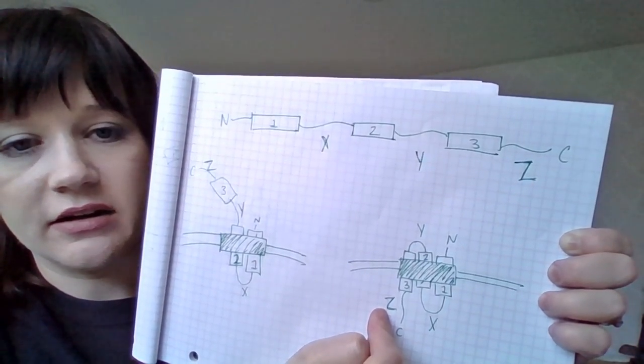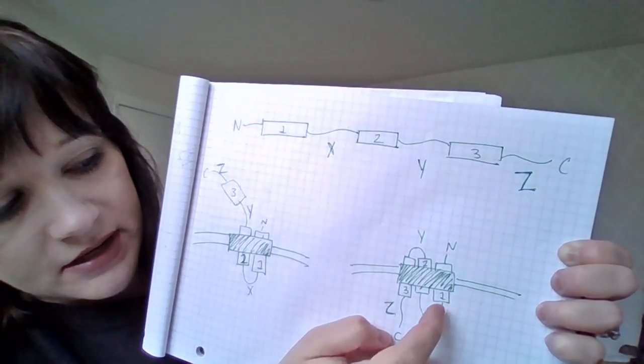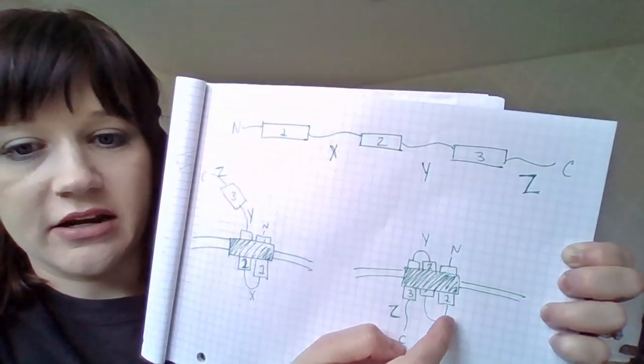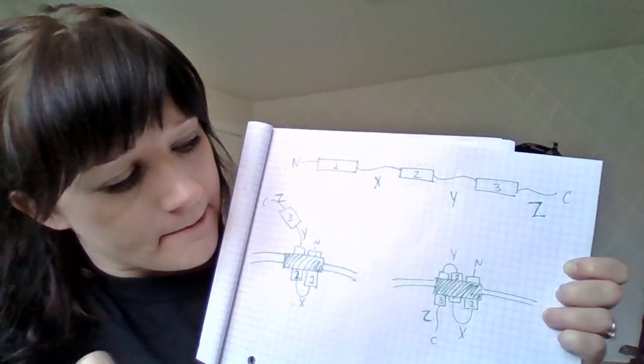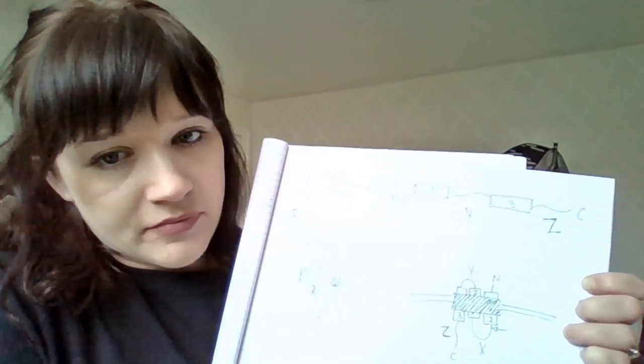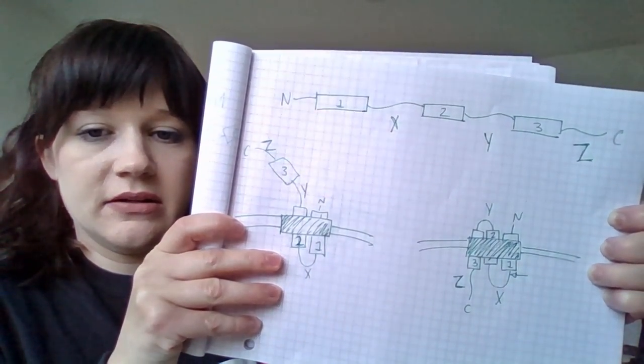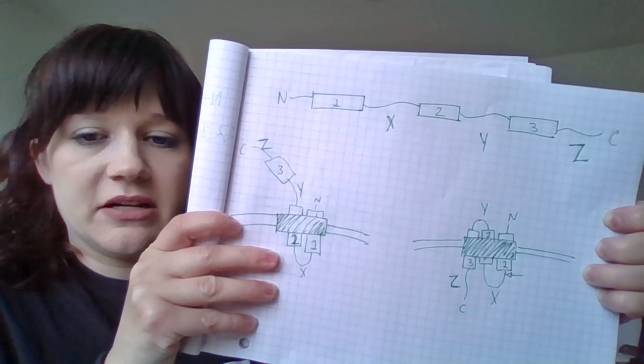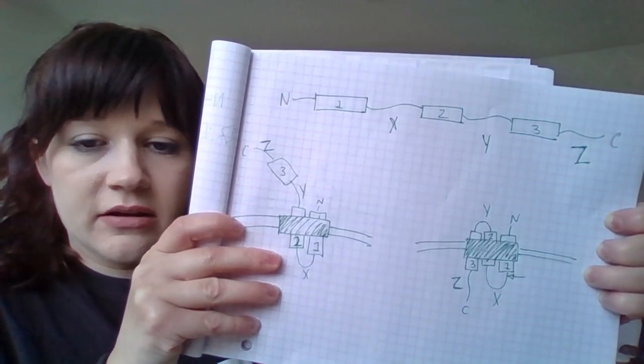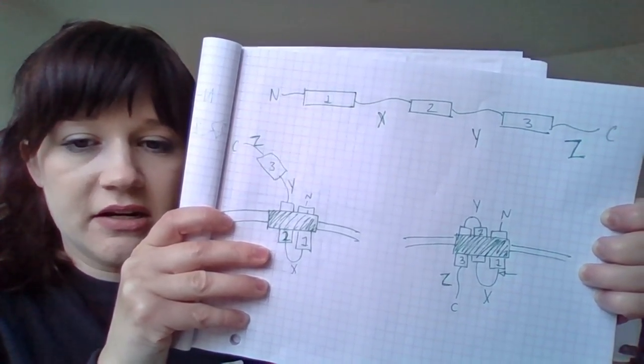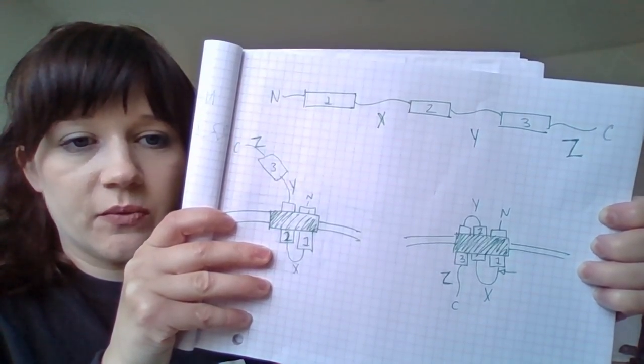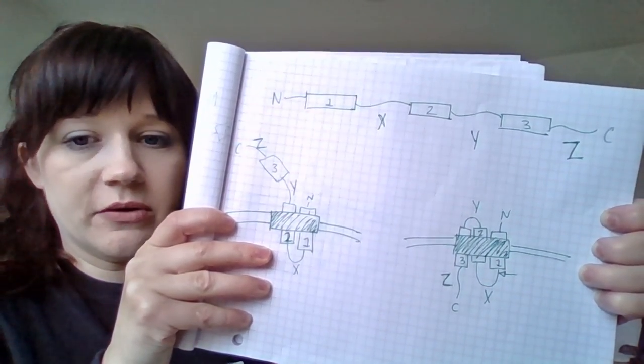But we're not done yet, right? We know that the signal peptidase is going to act right here. So that is going to be cleaved right there. The translocator is going to let go of this protein, and that transmembrane region one is just going to kind of float away.